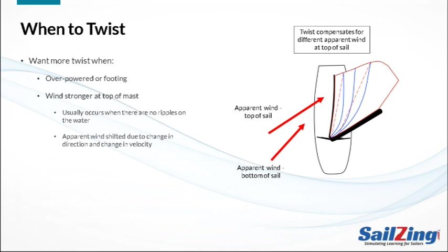Let's look more closely at the need for twist in light air. If the wind is stronger at the top, it will be shifted in direction for two reasons. First, the apparent wind will be shifted due to the velocity change, just like it shifts in a puff. Also, the true wind will be shifted to the right because wind veers as it speeds up — this is due to the earth's rotation and is the same reason that water curves as it accelerates while entering a drain. These direction changes require you to twist the sail to compensate, and the amount of twist will likely be different on each tack.